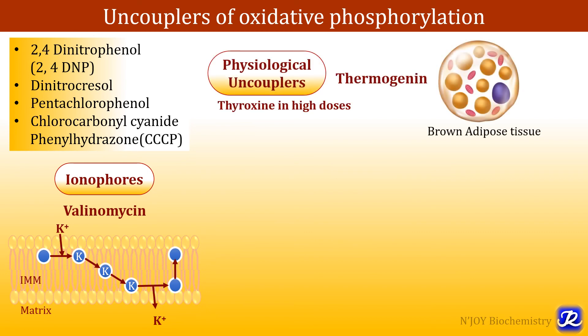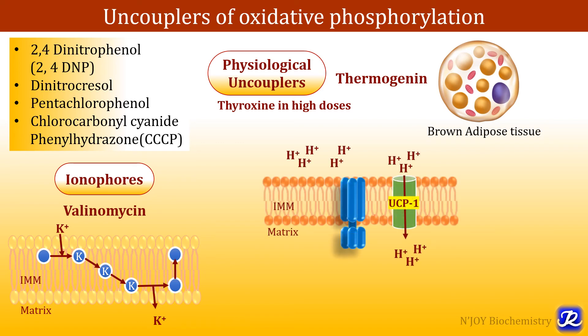The physiological uncouplers are thermogenin and thyroxine in high doses. Thermogenin is a protein present in the mitochondria of brown adipose tissue, and this tissue is rich in mitochondria. It is present in all newborn mammals including humans. Brown adipose tissue mitochondria are similar to other mitochondria except they contain an additional protein called thermogenin, which acts as a channel for migration of protons from the intermembrane space into the matrix, uncoupling oxidative phosphorylation and releasing free energy as heat.